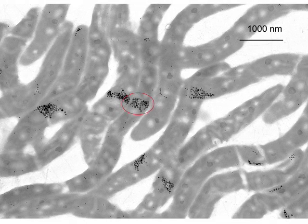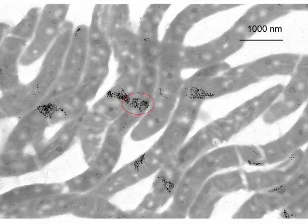If you genetically modify the bacteria by removing the gene responsible for creating the MAM-J protein, the magnetosomes are no longer able to attach themselves to the filament, and the chain will naturally collapse to form a cluster-like arrangement, as shown here. Such clusters are not efficient for magnetotaxis because they have no net magnetisation and therefore don't generate a large external magnetic field.